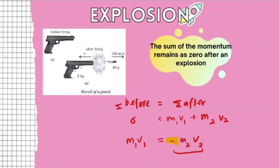The general equation for an explosion that you must write when a question involves explosion is: m1v1 = -m2v2. Please memorize this equation.